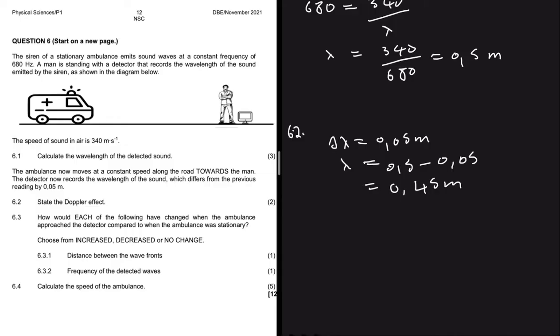Question 6.2 also asks us to state the Doppler effect — that's just a definition. It says: the change in frequency, pitch, or wavelength of the sound detected by a listener because the sound source and the listener have different velocities relative to the medium of sound propagation.